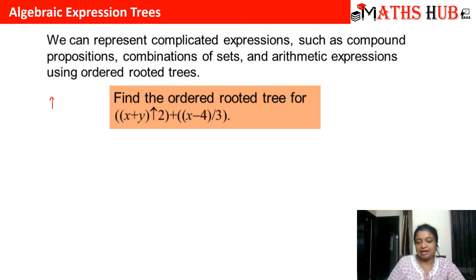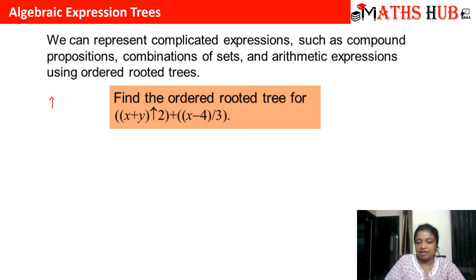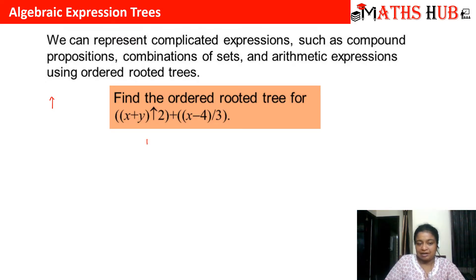In this case, you can see that plus is the main vertex which is joining the first bracket with the second bracket. We have to identify which expression is joining the two things, and make that vertex the root vertex. The two further expressions will become the left subtree and the right subtree. So plus becomes the root.